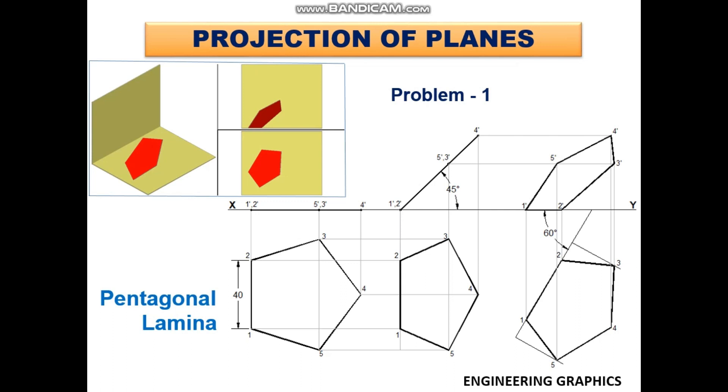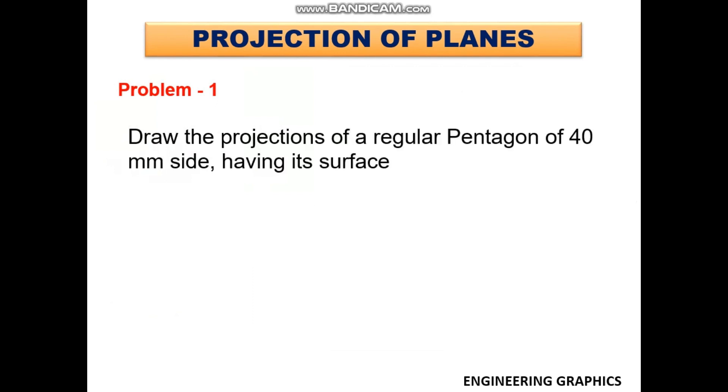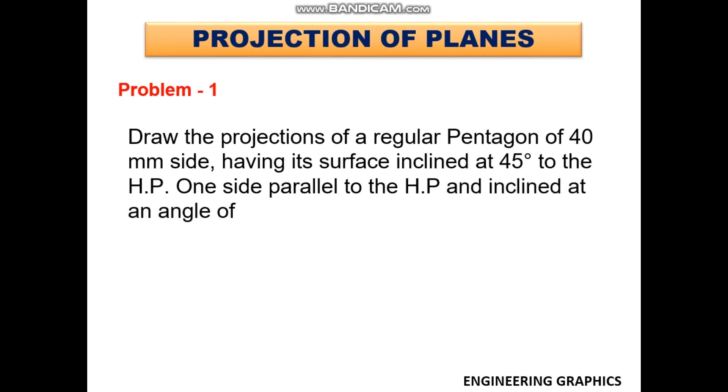This video explains projection of a pentagonal plane inclined to both HP and VP. Let us see a problem. Draw the projections of a regular pentagon of 40 mm side having its surface inclined at 45 degrees to HP, one side parallel to HP and inclined at an angle of 60 degrees to VP.